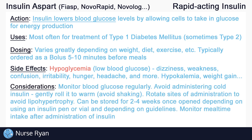Always remember to assess and monitor for side effects of insulin. Monitor blood glucose levels regularly according to the doctor's order — it is common to check blood glucose before every administration of insulin, unless ordered otherwise. Avoid administering insulin directly from the fridge, as it will still be cold, which can be more uncomfortable when injecting. To warm the insulin, gently roll it in your hands and avoid shaking. Remember to rotate the site of administration with each dose to maintain adequate absorption by the tissues.